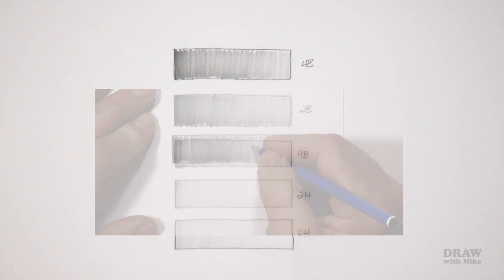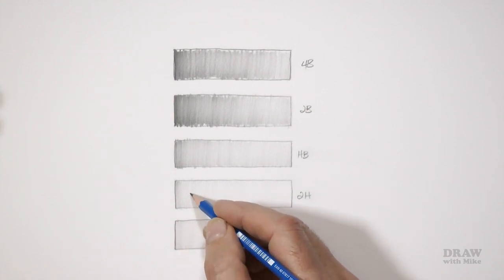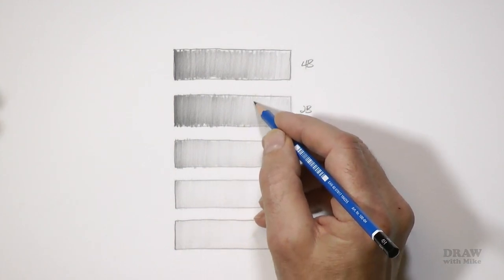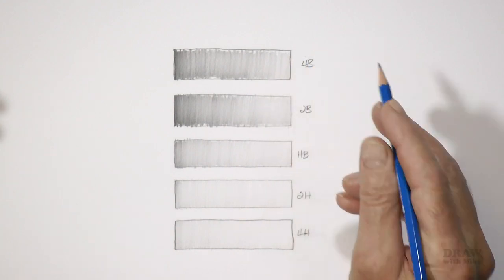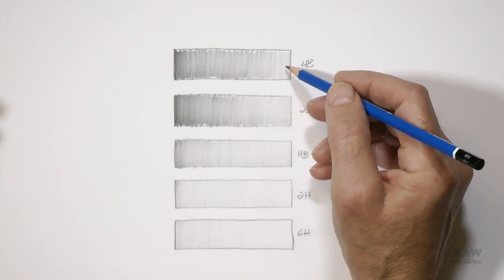When you've finished, compare each box to the one above and below. You'll notice each grade reproduces at least half the values of the adjacent grades. Try to match the value of the left hand end of the 4H box all the way up to 4B. Notice also how the harder H grades are smoother - that's because they contain more clay - and the softer B grades are coarser and grainier.